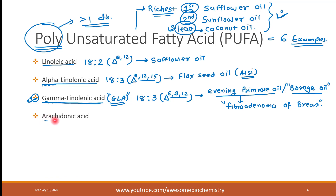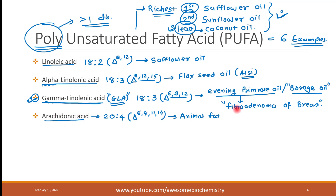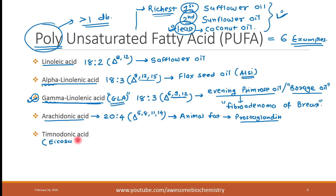The next example is arachidonic acid — a 20-carbon long compound having four double bonds, written as 20:4. The locations of the double bonds are delta 5, 8, 11, and 14. Arachidonic acid is found in animal fat and is important because it gives rise to prostaglandin synthesis. Prostaglandins are local hormones synthesized from arachidonic acid.